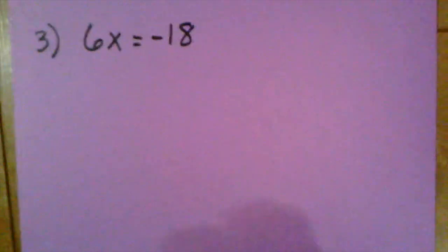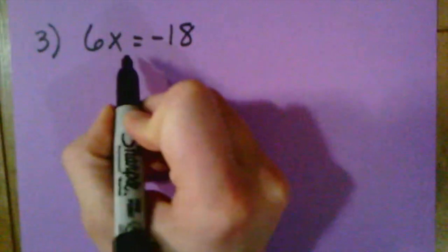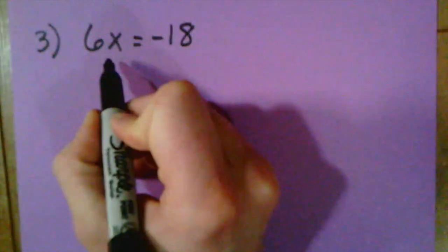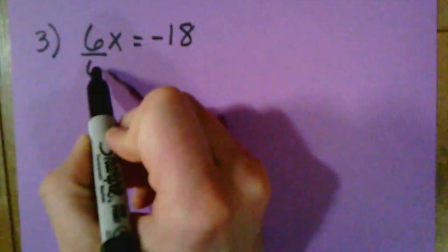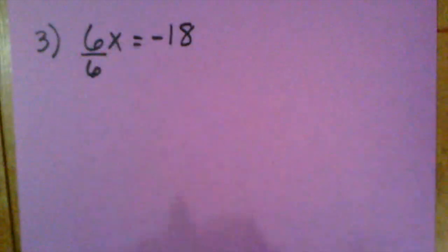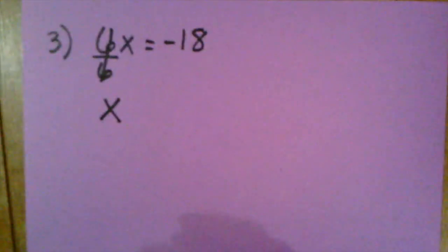For our third example, we'll go ahead and try some multiplication. We have the problem 6X equals negative 18. We're thinking about using inverse operations. Since I have 6 times X, the inverse of multiplying is dividing. So I can divide by 6 on this side because 6 divided by 6 is 1. And that means I have 1 times X which just simply leaves me with an X. So the 6's will cancel each other out.